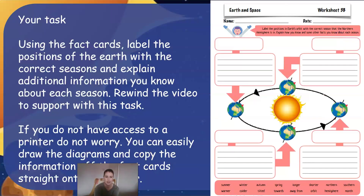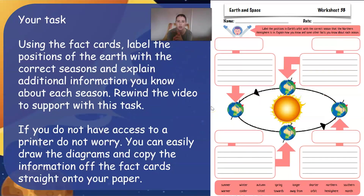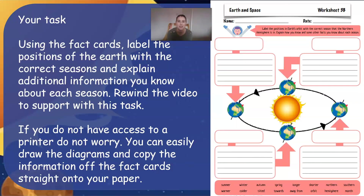For today's task, use the sheet you have at home along with the research cards. If you have access to a printer, scissors, and glue stick, you can cut it out and stick it in. If not, draw the diagram in your books and copy the information from the fact cards. Label the correct seasons, show how close each position is to the sun, and use the additional information to record extra facts about those specific seasons. If you're stuck, rewind to the beginning of the video. Once done, send your work in and I'll give you feedback — good luck!